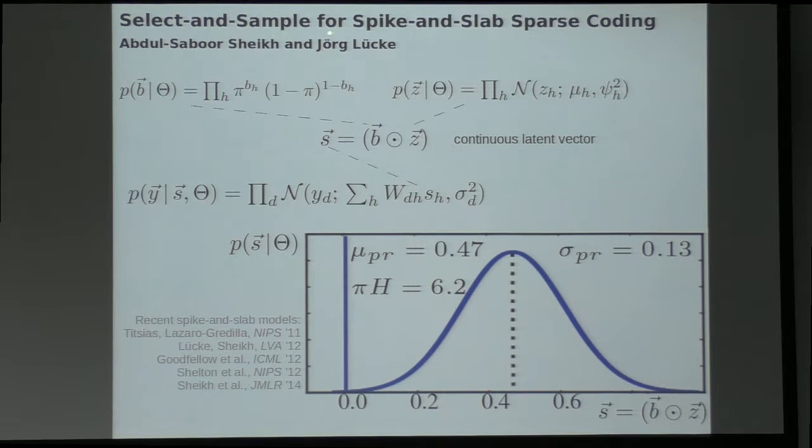In our paper, Select and Sample for Spike and Slab Sparse Coding, we study approximate probabilistic inference in very high dimensional latent spaces.